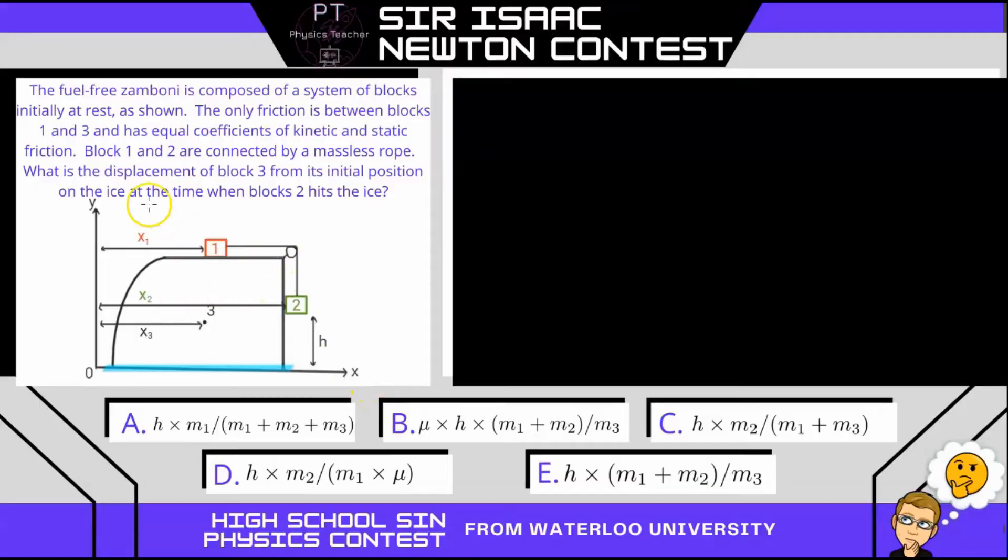In this question, we have a fuel-free Zamboni, where here we have block 3, and then on top of it block 1, and through a pulley rope system, block 2. Now the only place where we have to consider friction is between block 1 and 3. Between block 3 and the ground, there's no friction, and even though there is contact between 2 and 3, no friction.